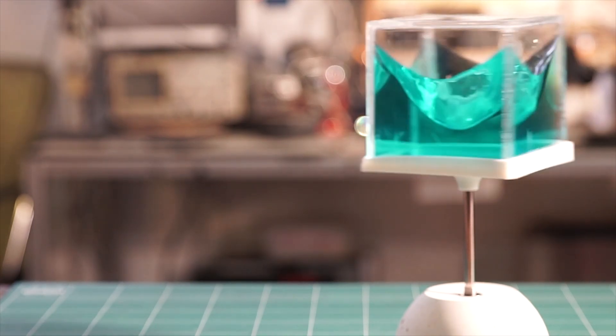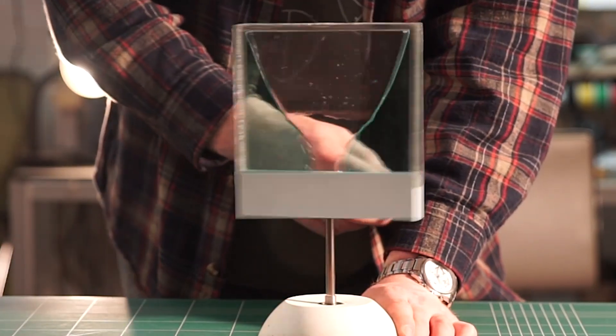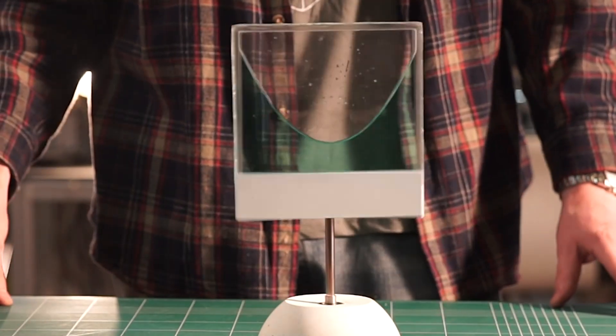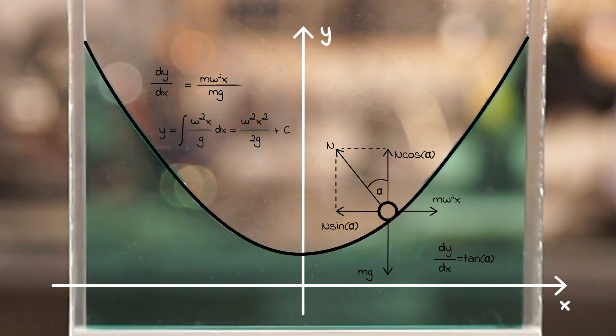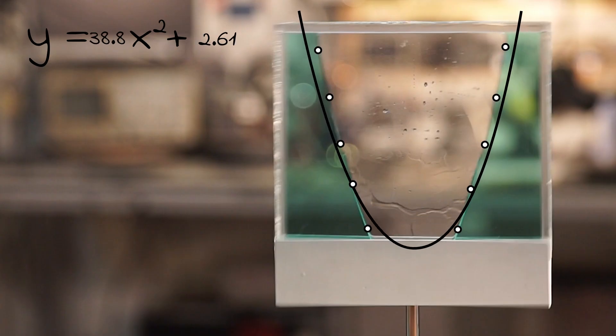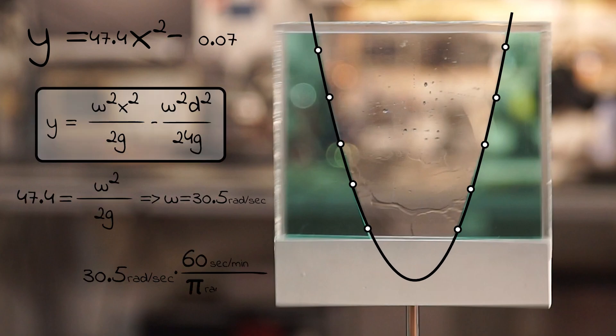Just to recap what we did in this video. We started by observing a physical phenomenon, then formulating a mathematical representation of this observation using simple physics and math. And finally, we've put our analysis to the test by using it to measure a value we could easily verify by a direct measurement. This is what science is all about.